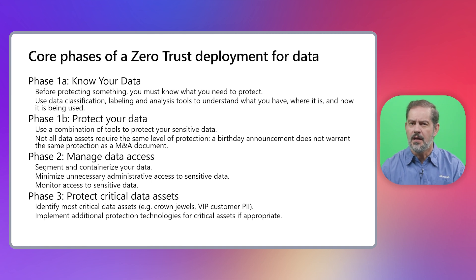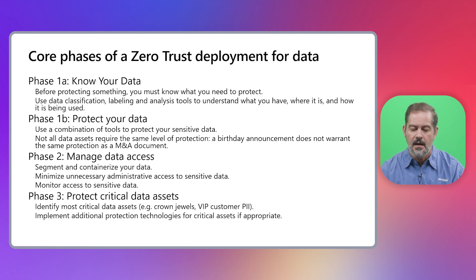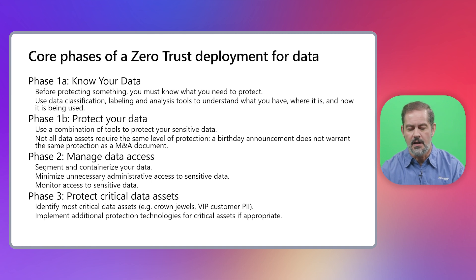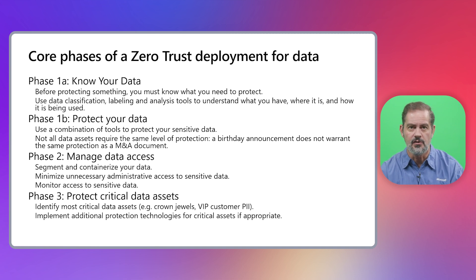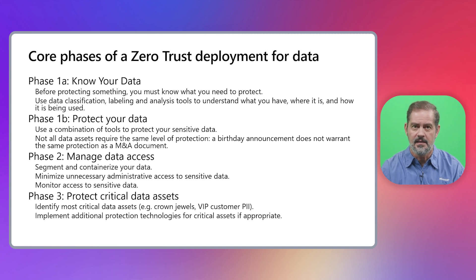When it comes to data, companies don't have thousands of assets — they have billions, including every email, every document ever written, and every version. You won't want to analyze each individually. Instead, you identify classes of data — for example, documents with customer PII, intellectual property, or M&A discussions — and determine what they mean for the company, who should have access, and how they can be detected effectively and systematically.